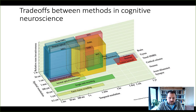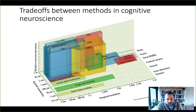You have some methods that have a very high spatial and temporal resolution, such as single-unit recordings. These are electrophysiological recordings that require implanting an electrode into the brain. They're also relatively invasive, and therefore we don't often use them in humans — sometimes in animals.